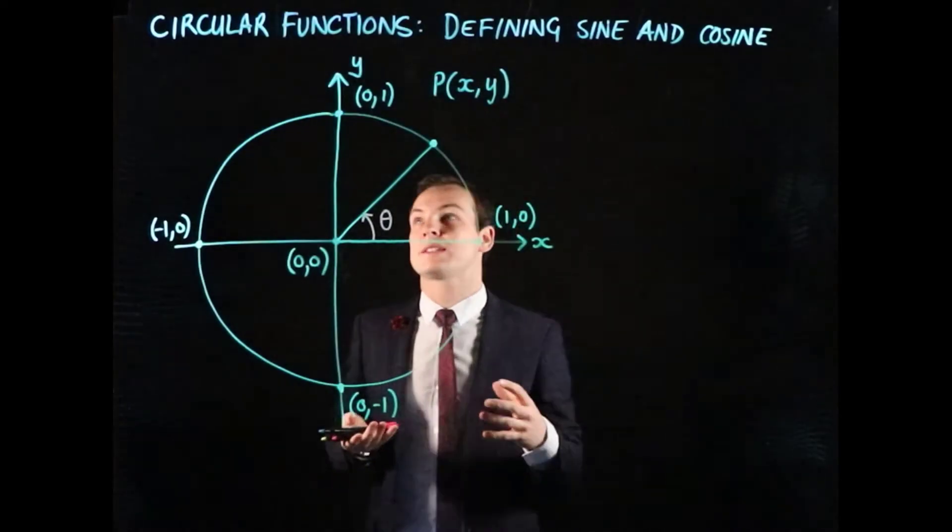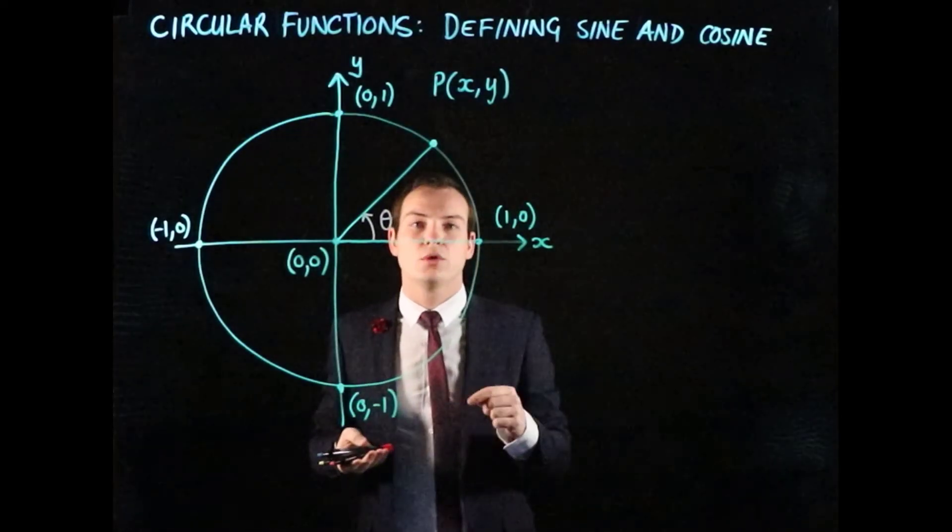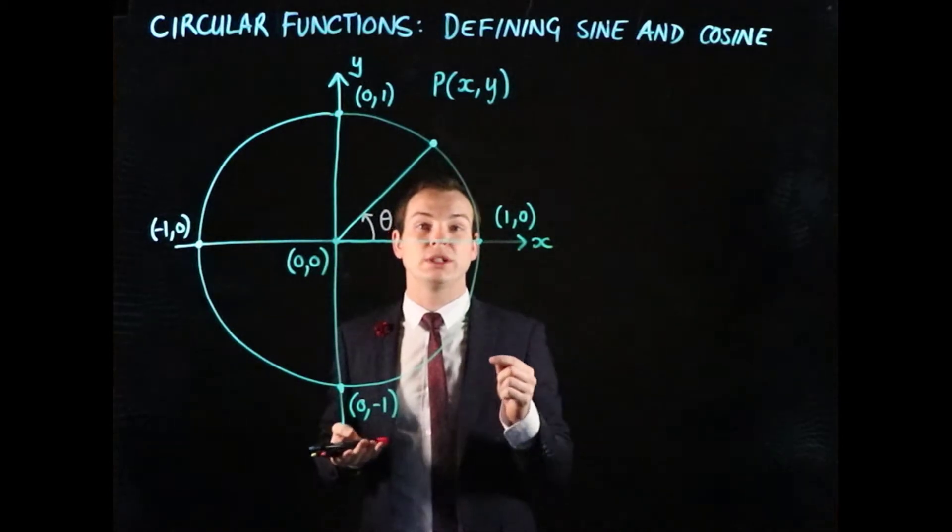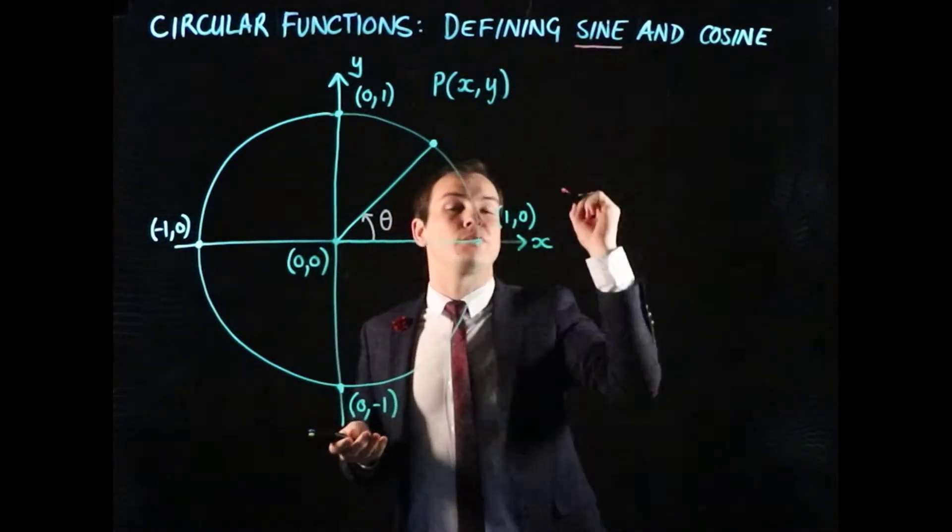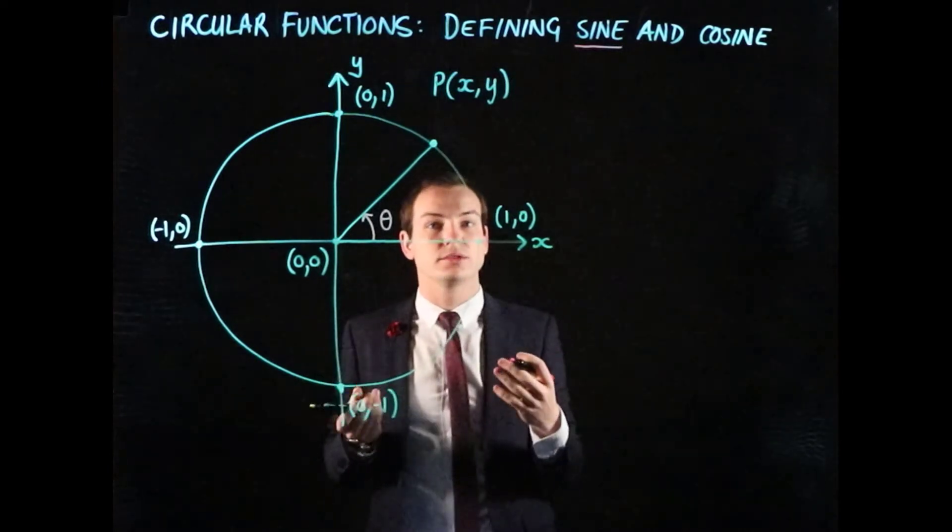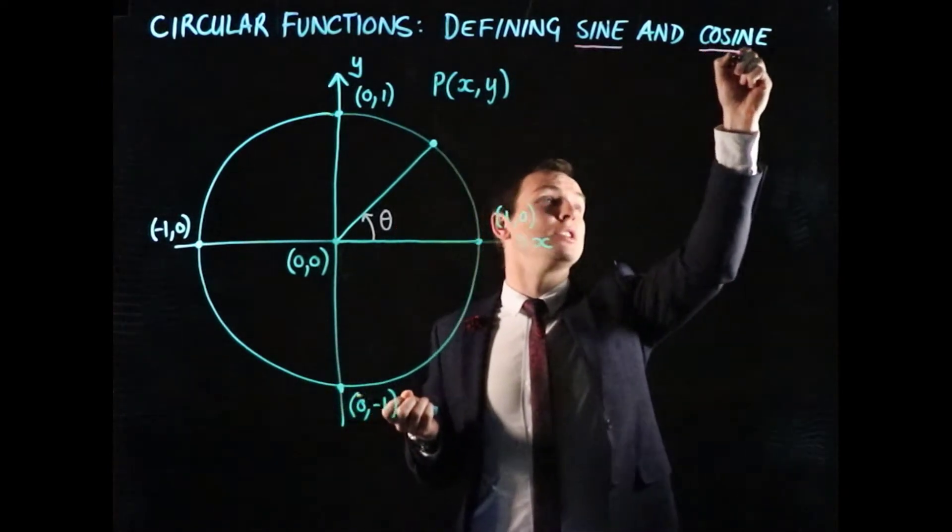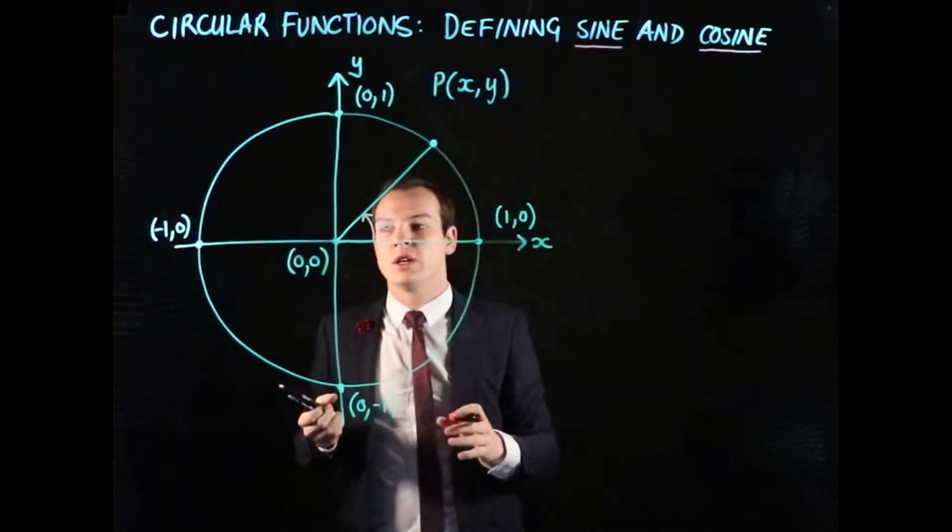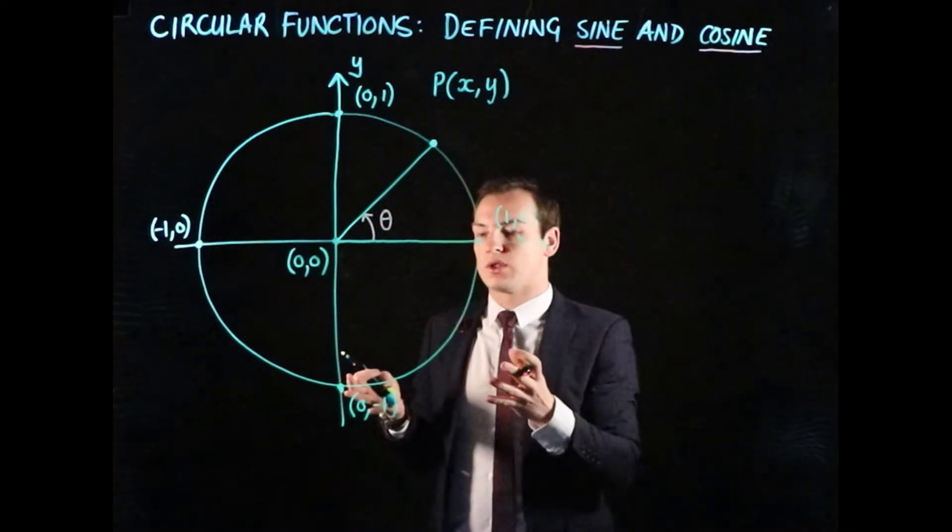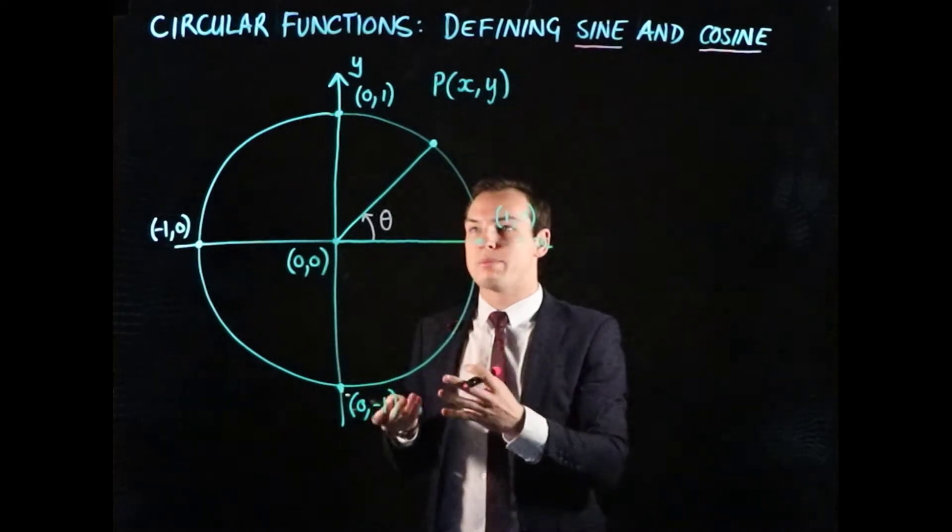As we move along with our study of circular functions, we're now at the point where we want to formally look at how we define sine, which you should be familiar with from right angle triangles, and cosine, which is another trig ratio that you should be familiar with. You may have recognized this unit circle from the video we did right back at the start.